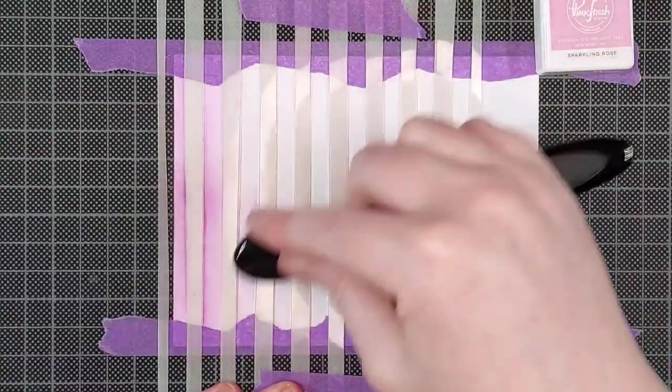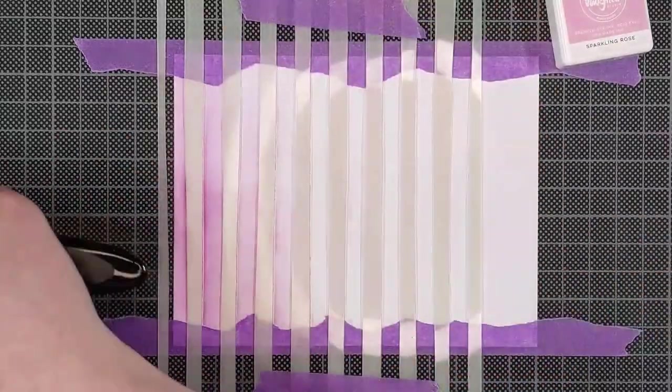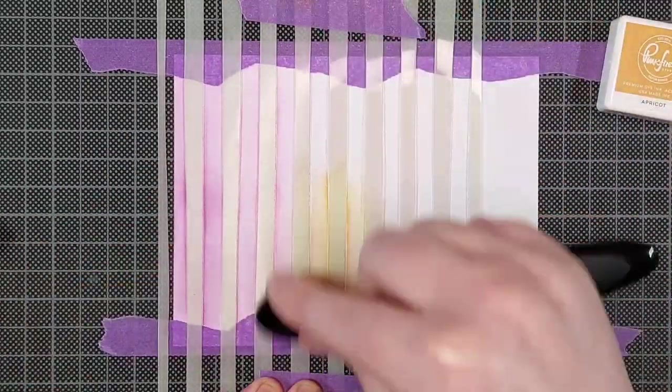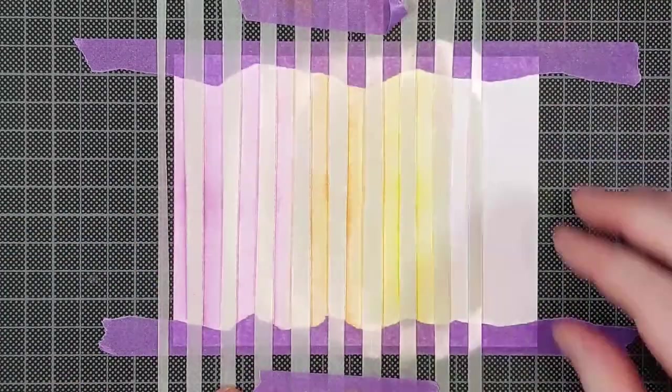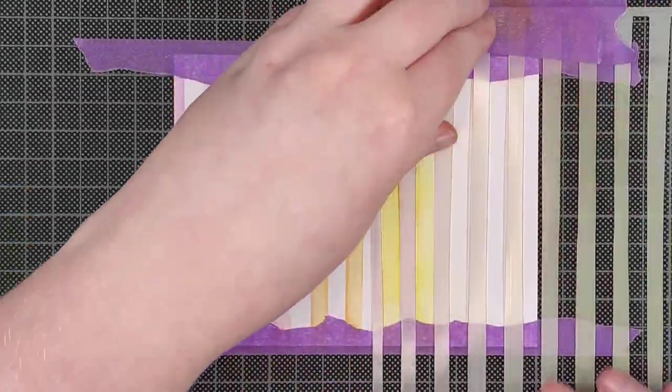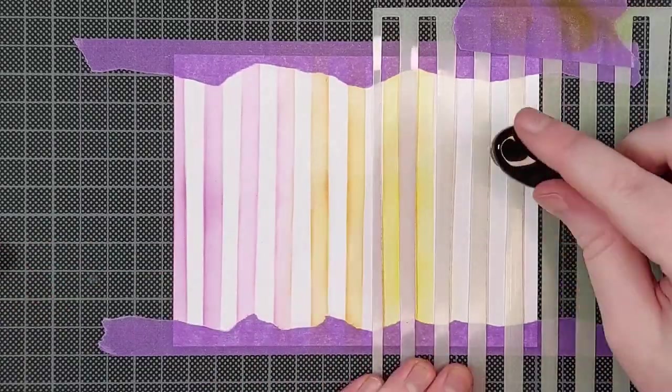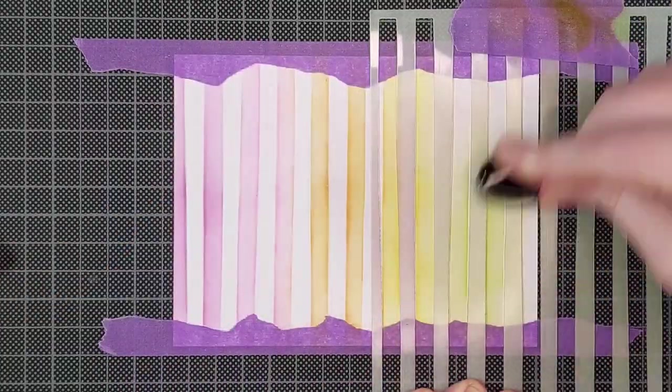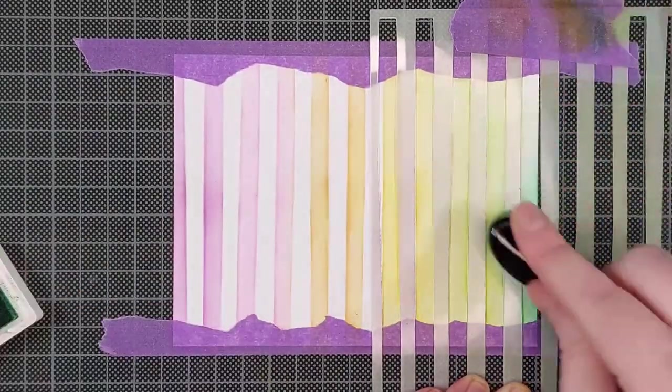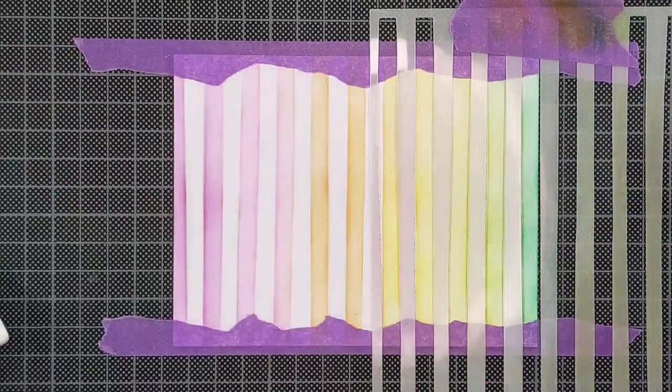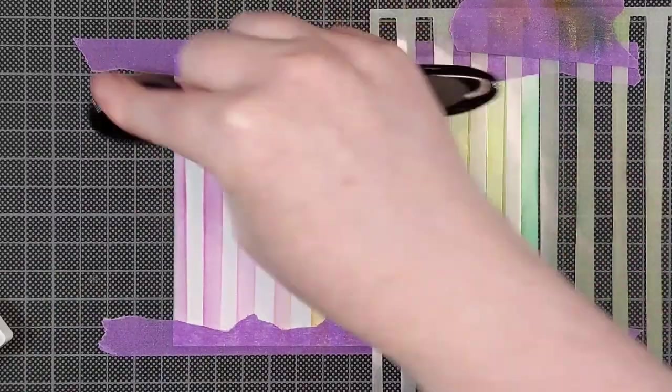This stencil is one of the Ranger Lederate stencils. And I'm using some Pinkfresh Studio dye inks to make a rainbow. You can find the full list of inks in the description below. I'm moving my stencil over to continue the rainbow. And for this first layer I'm using very light colors. But I will add a second layer of darker colors just in a second.